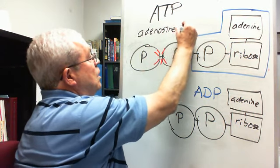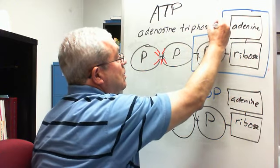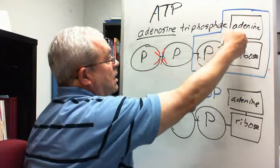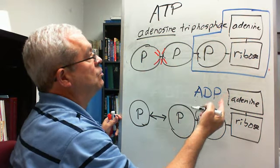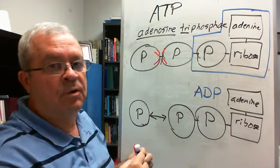Adenosine triphosphate. And so adenosine, again, comes from a combination of those two words, adenine and ribose. Triphosphate from the three phosphate groups.